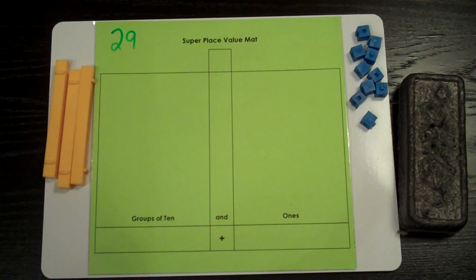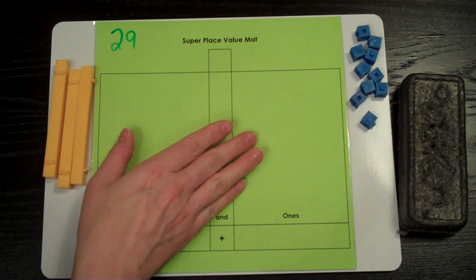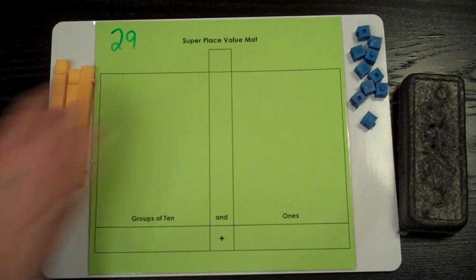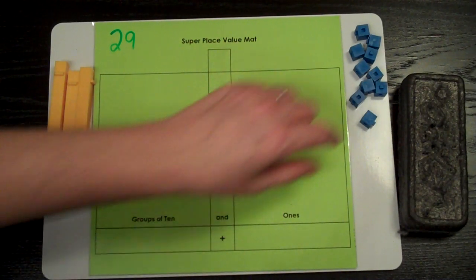It's a good habit to start with the ones place first. Remember, the far right is always the ones place. This number has nine ones. We are going to count, and as we count, we're going to put our units on the place value mat in the ones place.